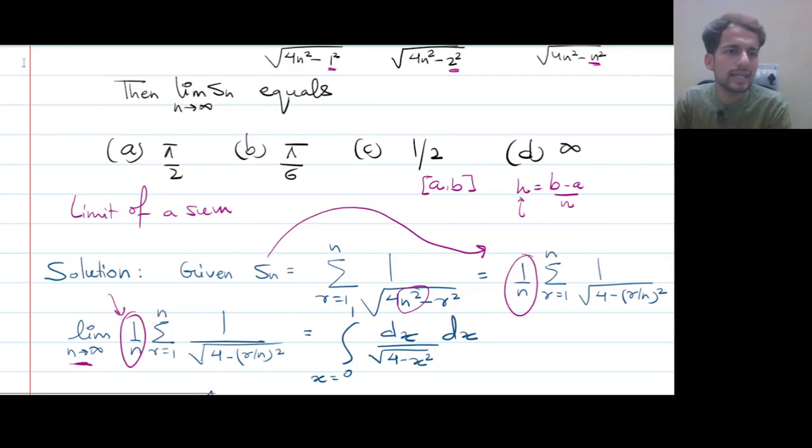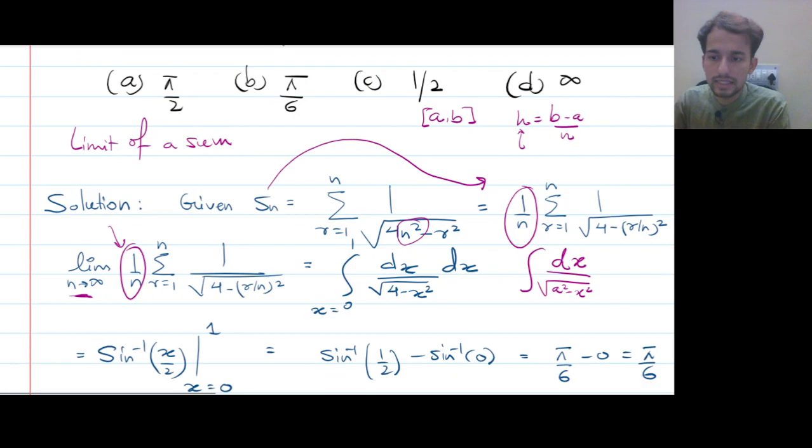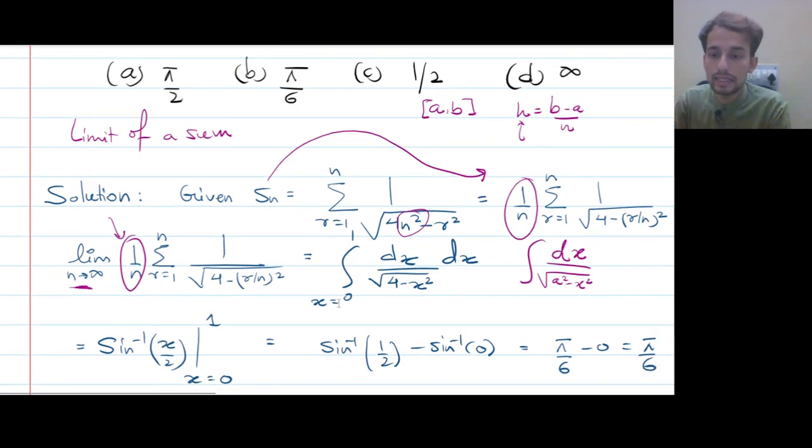So, this will become an integral from 0 to 1 dx over square root of 4 minus x square. And now, it's pretty straightforward to integrate such a function. We know that integral of dx over square root of a square minus x square equals sine inverse of x by a plus some arbitrary constant. If it's an indefinite integral, but it's a definite integral, so there would be no arbitrary constant c. So you can use that formula directly and calculate this integral. When you compare, a will be 2 in this case.